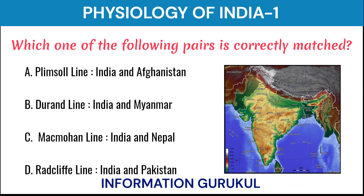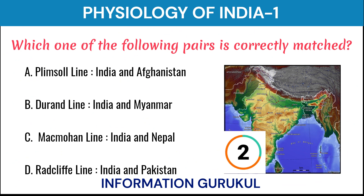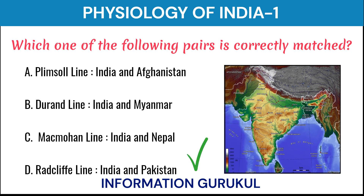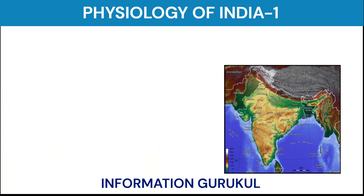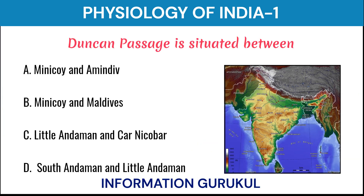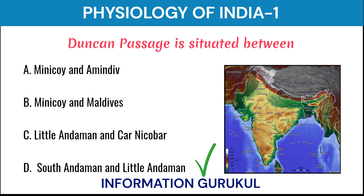Which one of the following pairs is correctly matched? Radcliffe Line — India and Pakistan. Duncan Passage is situated between South Andaman and Little Andaman.